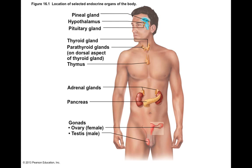It turns out that most tissues around your body secrete some sort of hormone, but we have several key endocrine glands we can find around the body. Some of which are located here deep within the brain, such as your pineal gland, the hypothalamus, and pituitary gland. In later videos, we'll go into more detail about specifically what these glands do.